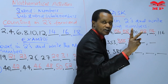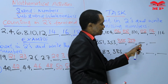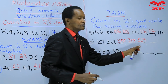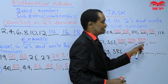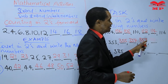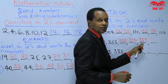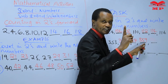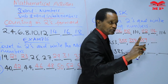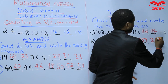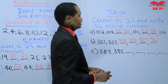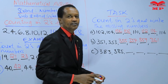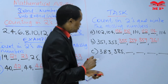Continuing in sequence B: 357, 358, 359 — the missing number here is 359. After 359, the next number is missing, so we count in twos: 359, 360, 361 — the missing number is 361. Did you get that correct?